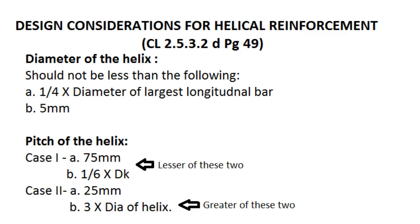Now let's check the design considerations for helical ties. We need to determine the diameter and the pitch. The IS code states that the diameter of the helical reinforcement should not be less than one-fourth of the diameter of the largest main bar, and should not be less than 5 mm — whichever is greater.